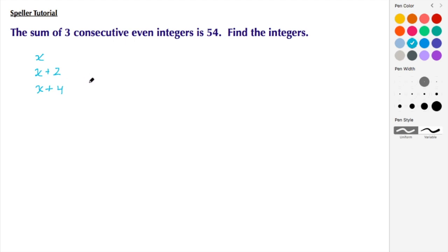So we have our expressions. The next thing we need to do is set this up into an equation. Here we're saying that the sum of those consecutive even integers is 54, so let's do that. The first expression X plus the second expression X plus 2 plus the third expression X plus 4 is equal to 54.